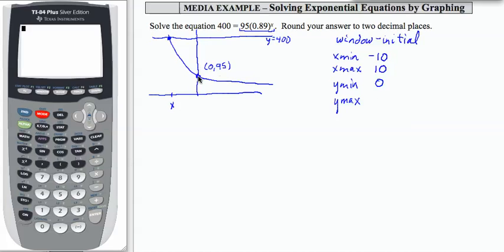y max has to be at least as big as the biggest of the initial value and the intersection value. So I'm going to say 500 for y max. As long as you get something bigger than 400, you're okay.